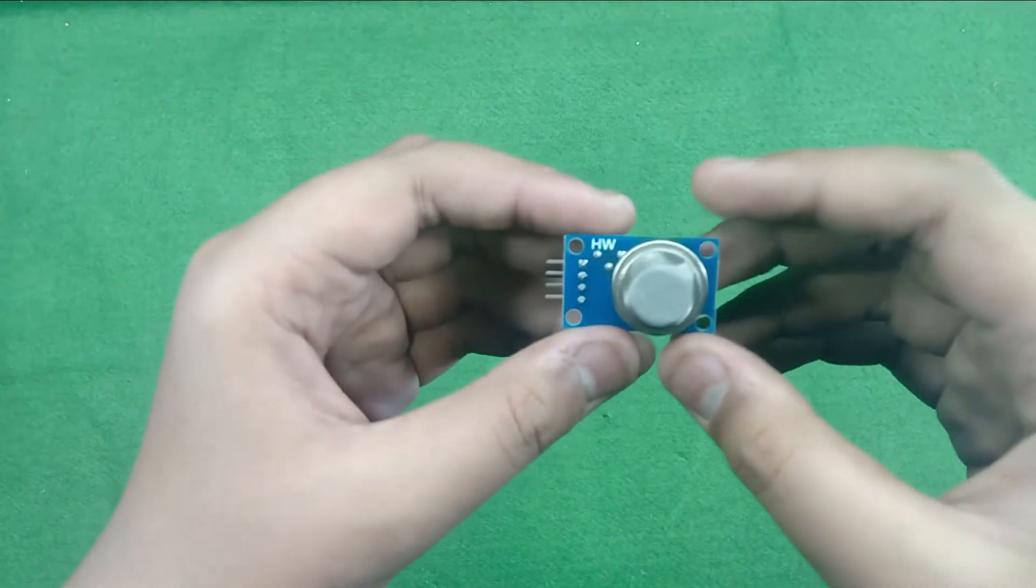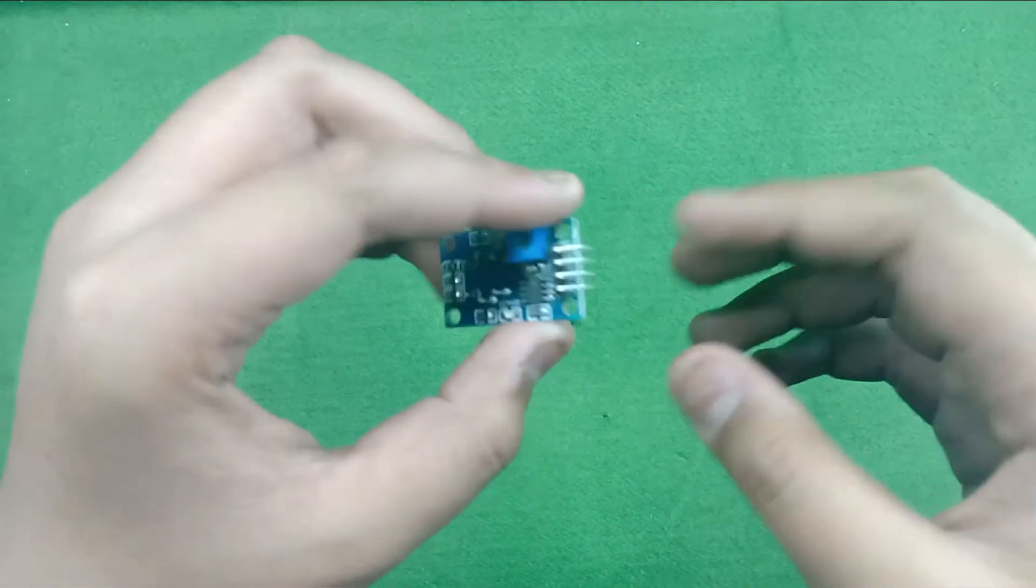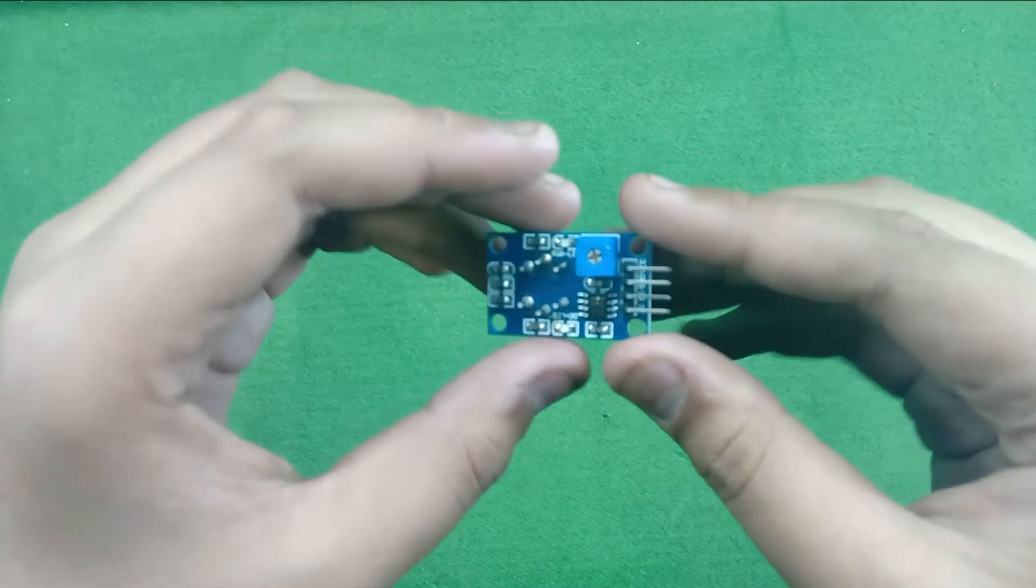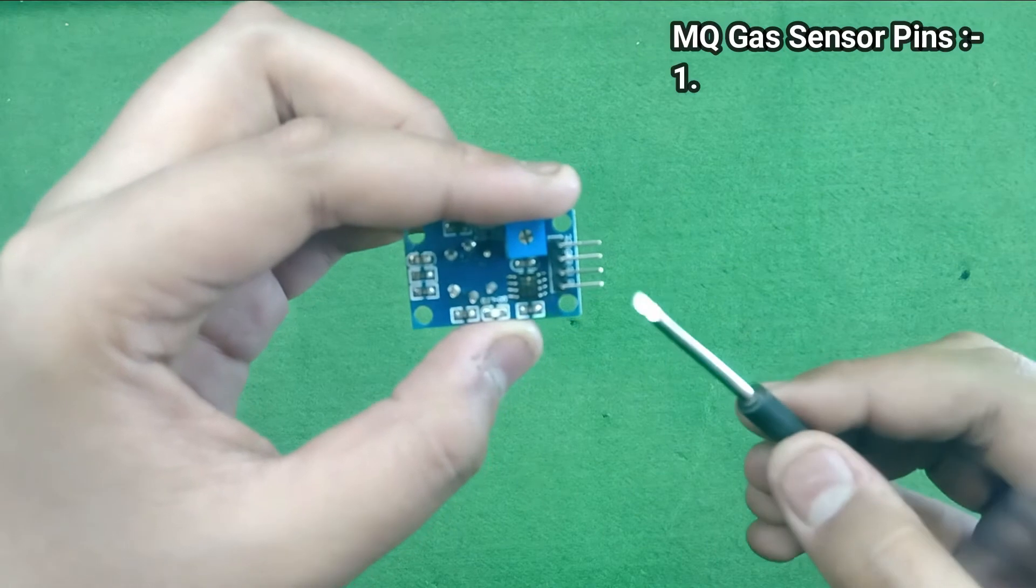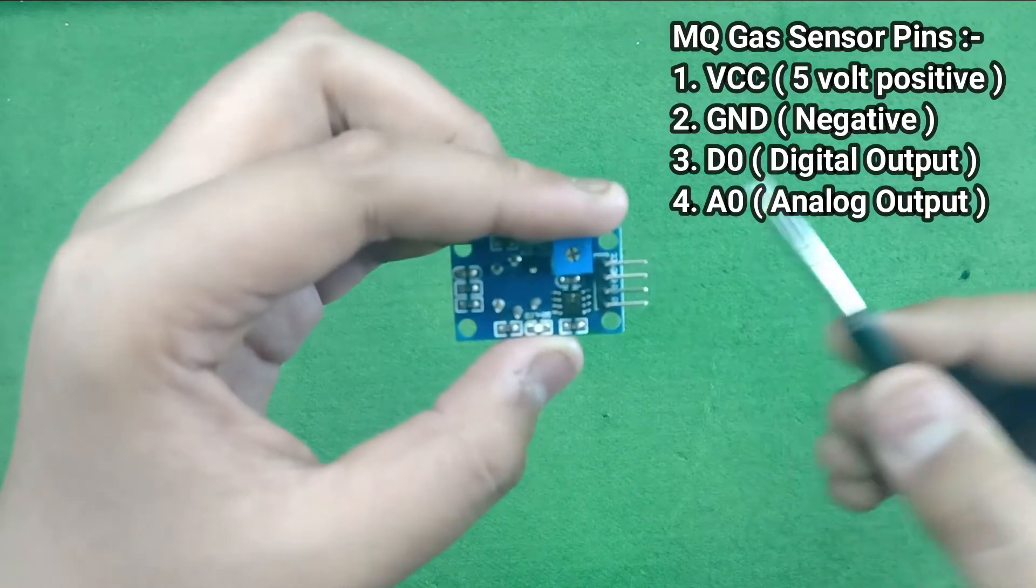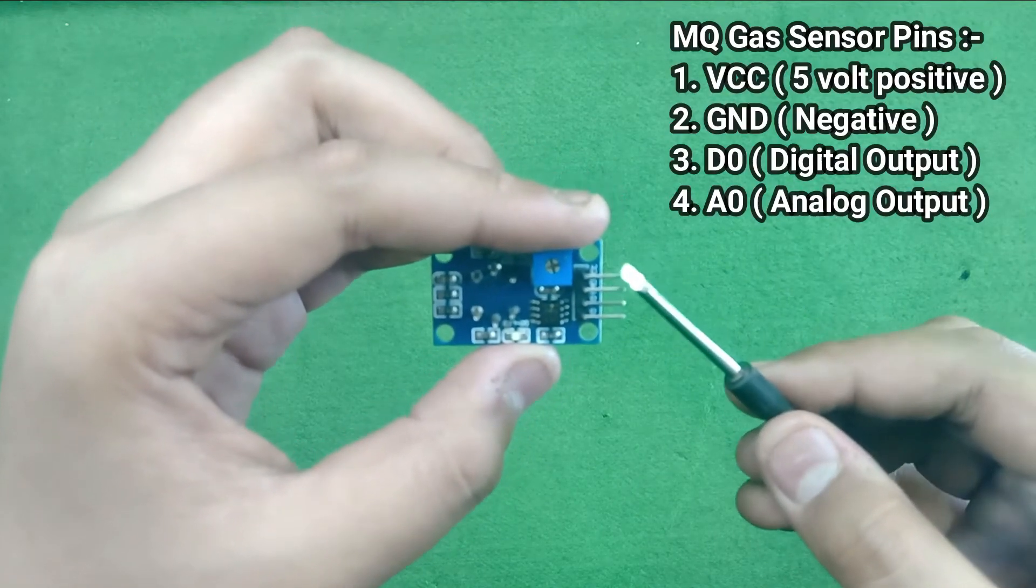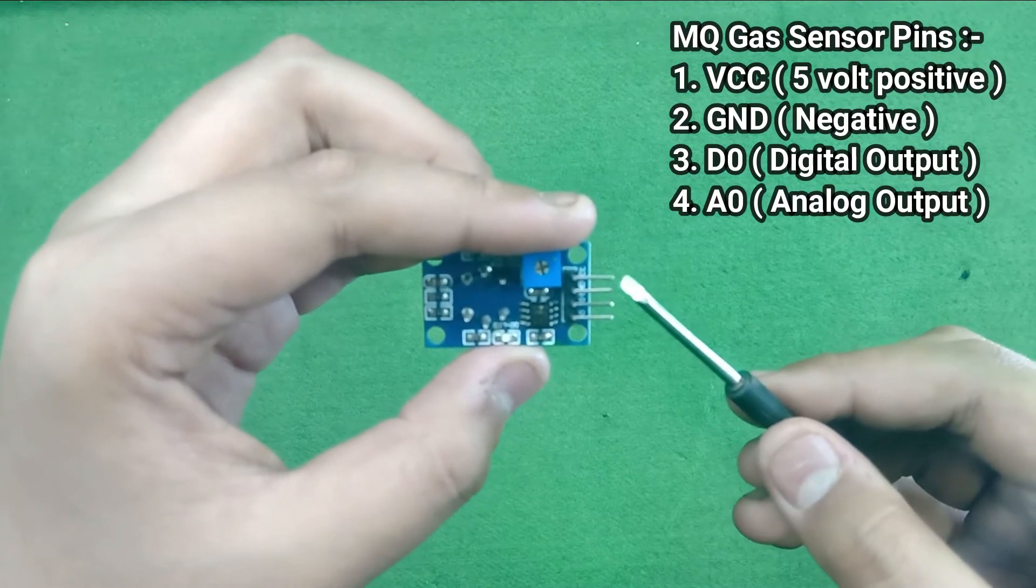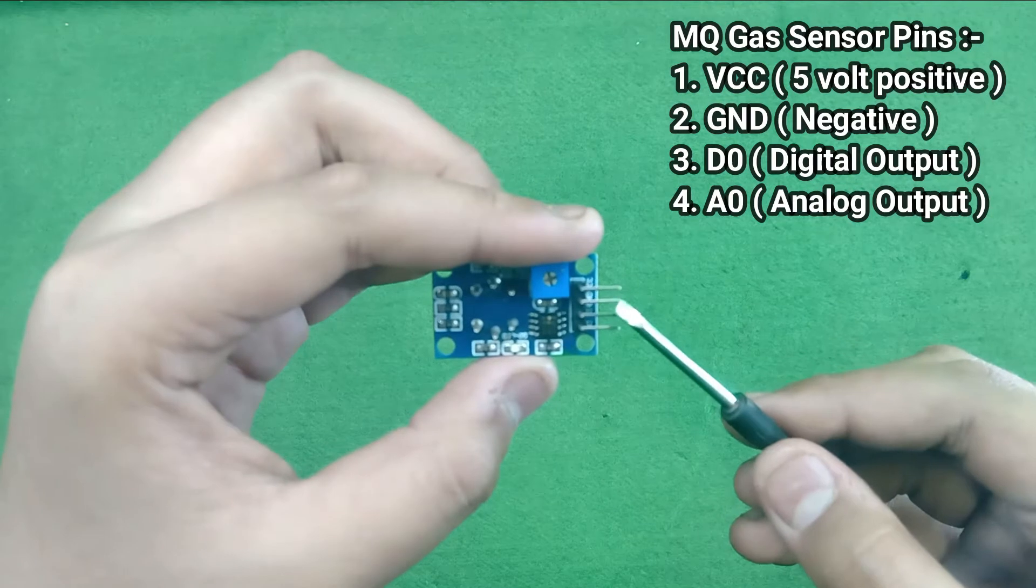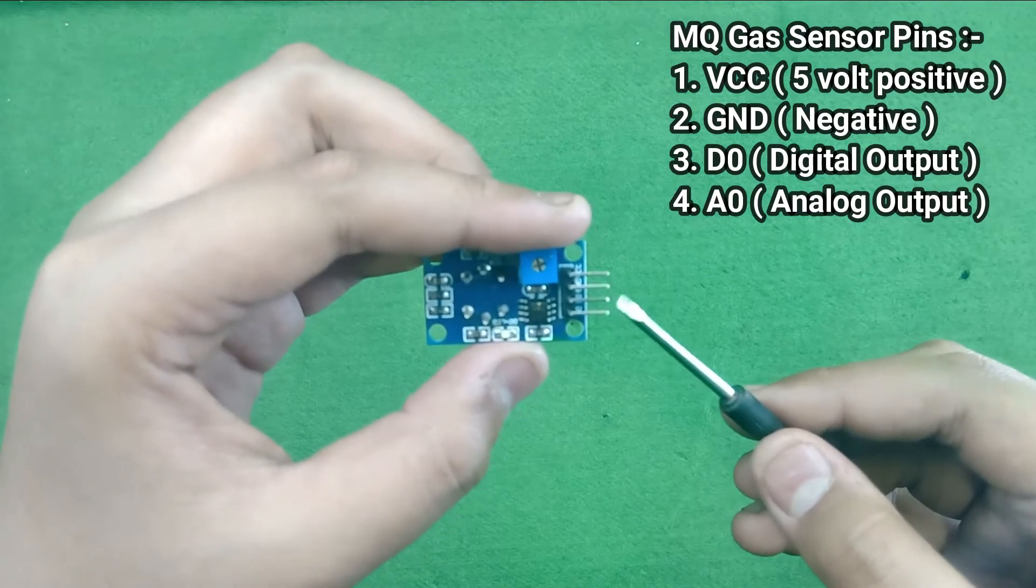First of all, we need to understand some wiring in this project. In the MQ95 gas sensor, here you can see the four pins, 1, 2, 3 and 4, in which the first pin is the VCC means 5 volt positive, then the ground, then the digital output and then the analog output.